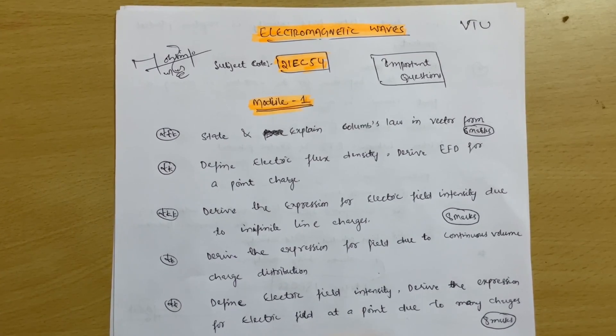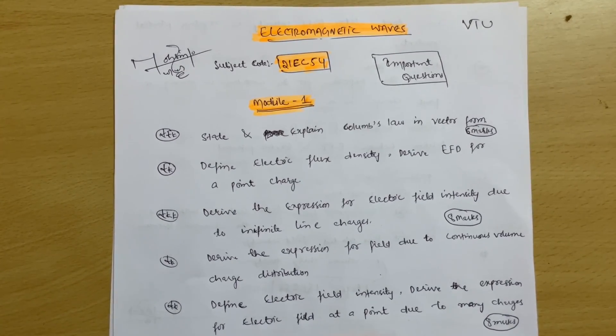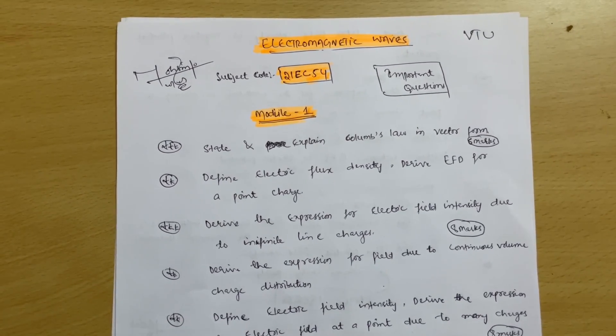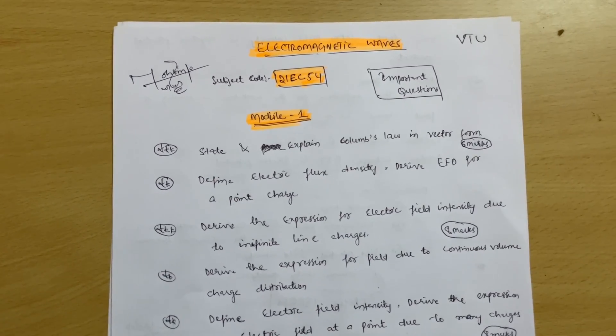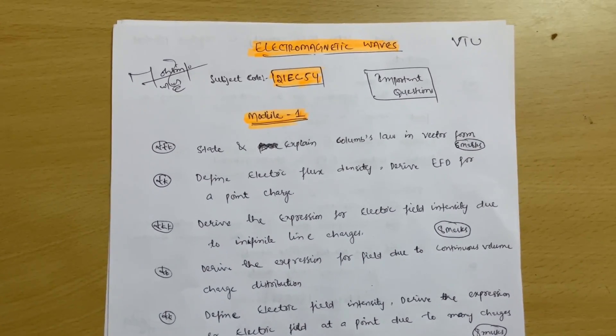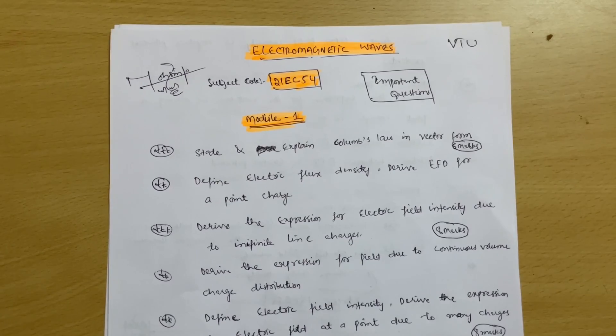Subject code is 21 EC 54. The syllabus is almost same as that of 18 scheme, the subject was 18 EC 55. You might have gone through the electromagnetism chapter in the PU second year itself. This is the anatomy of that particular subject.